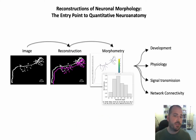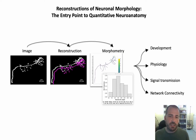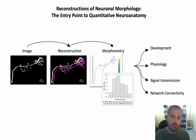Neuroanatomy is the study of the structure of the nervous system, and at the basis of each is what we call neuronal reconstructions, in which 3D models of the morphology of single cells are obtained from images. Such reconstructions can then be quantified, ultimately giving us insights into neuronal function, neurodevelopment, physiology, and insights into how networks of neurons are assembled and wired in the brain.